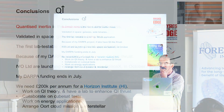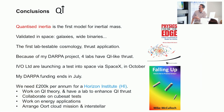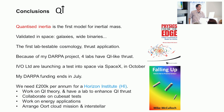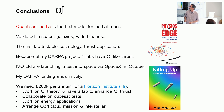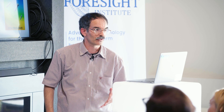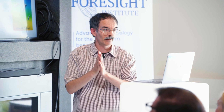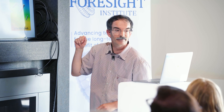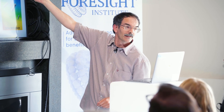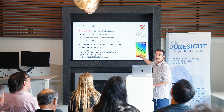Quantized inertia is the first model for inertial mass. I've tested it very carefully using astrophysical data and it's passed with flying colors. I suggested this lab test and this thrust, and I got funded by DARPA. An American company is launching a test into space in October to test the thruster. My DARPA funding ends in July, so I'm working on ways to keep this going and enhance the thrust. I'd like to set up a Horizon Institute to work on the theory and enhance the thrust by reducing the separation between the plates. I've also written books — my textbook is Physics from the Edge.